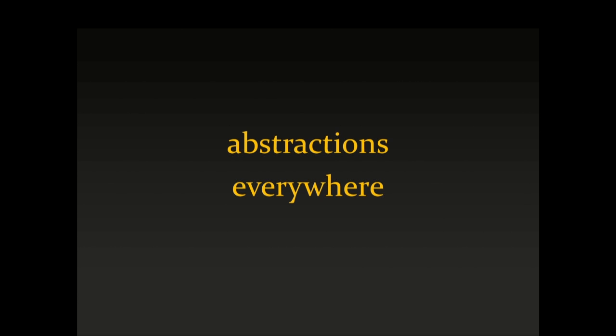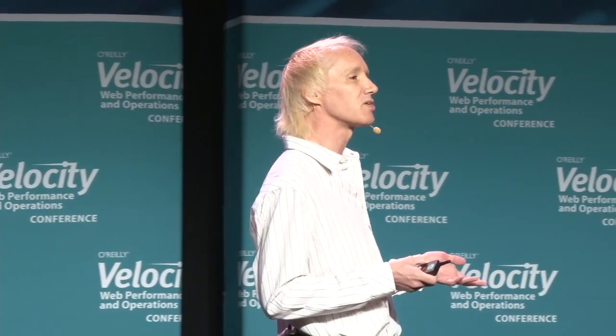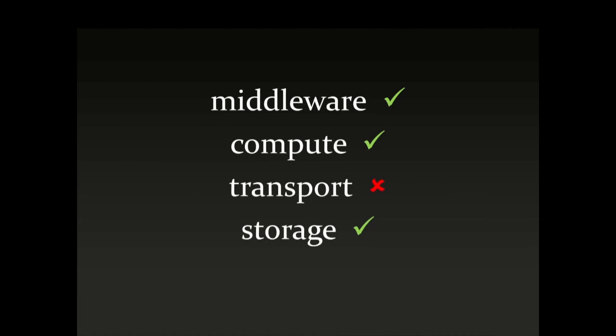If we move in this direction, the requirements boil down to the notion of abstractions everywhere. Some people get nervous about this, but in reality it makes things a lot easier, because at all layers of abstraction you can make changes at one layer without worrying about what's happening in adjacent or distant layers. Where we don't have a solid abstraction yet is at the transport layer.